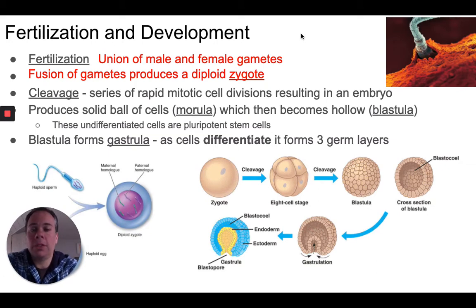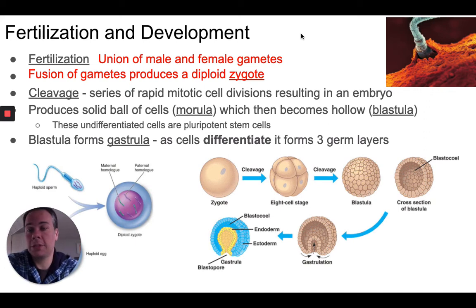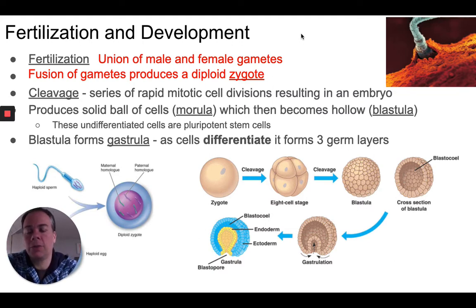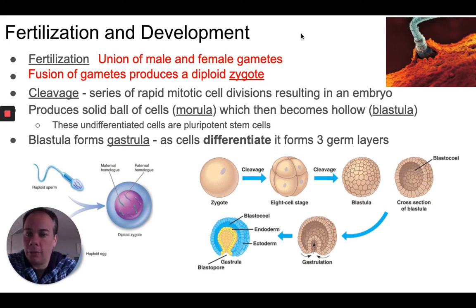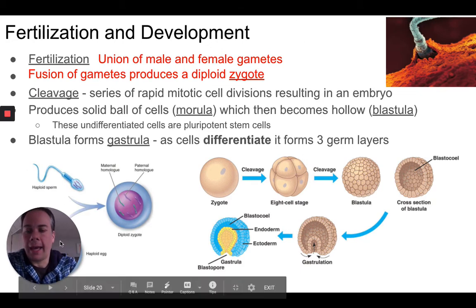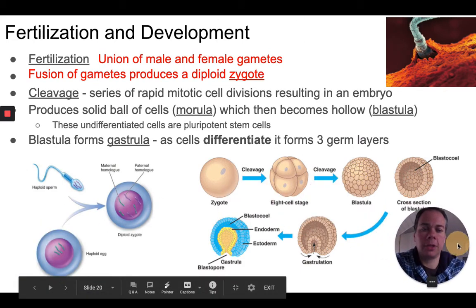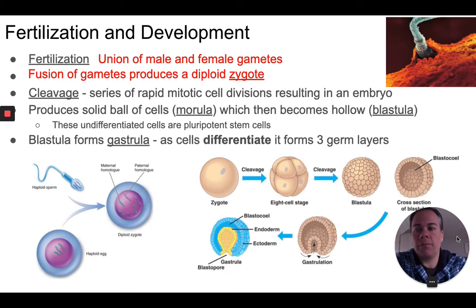In fertilization, the male and female gametes combine and produce a cell called the zygote. Because the zygote is created by two haploid cells, it itself is a diploid cell — it has chromosomes in homologous pairs and the full complement of chromosomes. For example, in human reproduction, the sperm carries 23 chromosomes and the egg carries 23 chromosomes; after fertilization they combine to form a zygote containing 46 chromosomes.